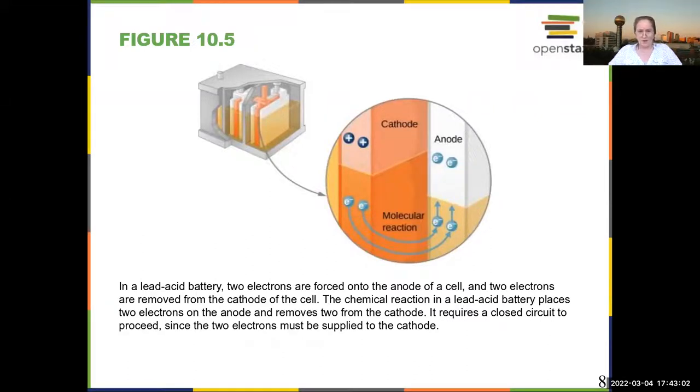What you have at the microscopic level is that you actually have electrons moving from the cathode, which is the positive terminal, to the anode, which is the negative terminal.